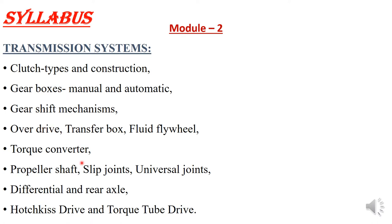We covered those portions till now. The last portion of this transmission system is propeller shafts — how we are going to transmit the power from gearbox to wheels. From transmission to wheel, we will cover propeller shaft, universal joint, differential, rear axle, and in the axle we have two types of drives: Hotchkiss drive and torque tube drive. We will study this much portion and complete the transmission system, then move on to the brake system.